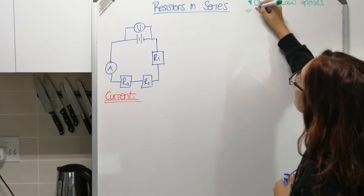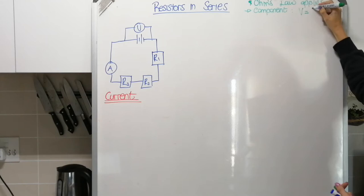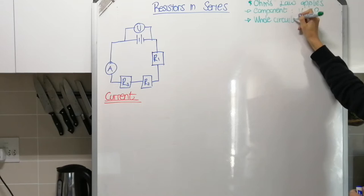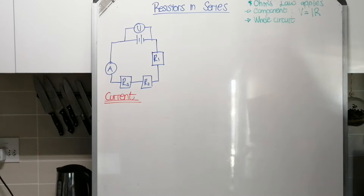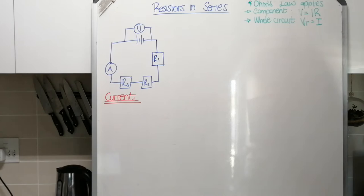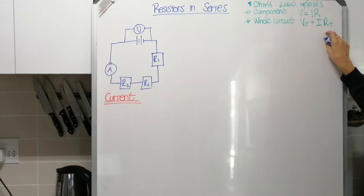Ohm's Law can apply across individual components. So if you're looking at just a single resistor or a single light bulb, Ohm's Law can apply — the potential difference across that component equals the current through it multiplied by its resistance. Or you can actually do it for the whole circuit. Looking at the entire circuit, you use the terminal potential difference, which is the total potential difference supplied by the battery, equal to the current through the battery multiplied by the total resistance. The things affected by what kind of circuit you have are V total, I total, and R total.